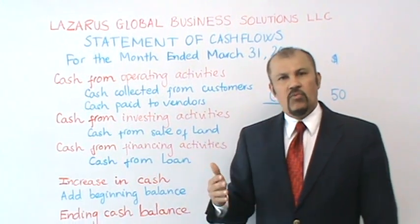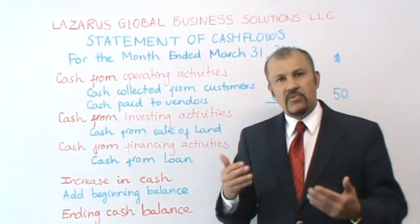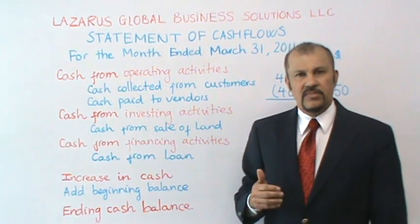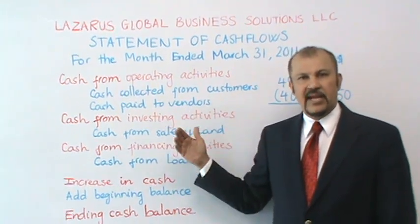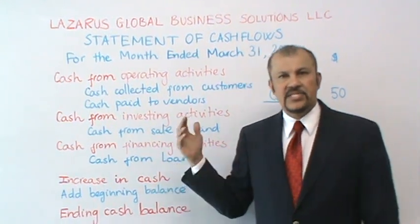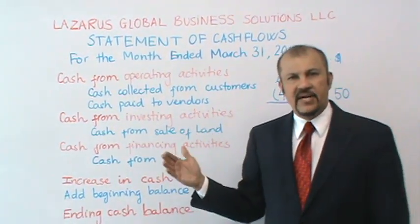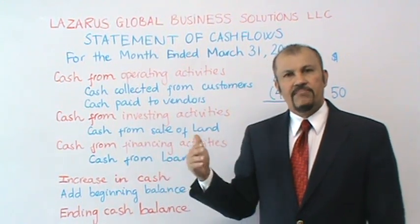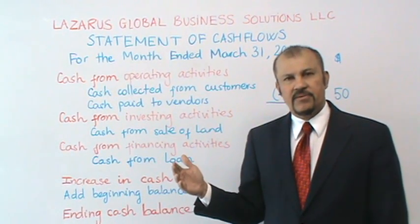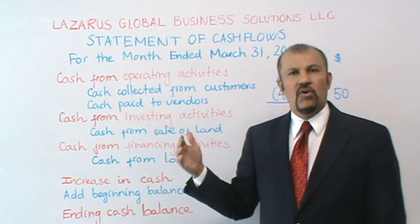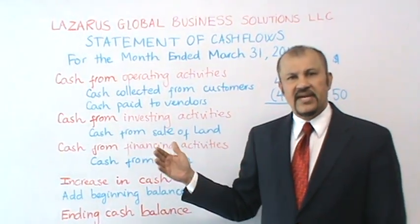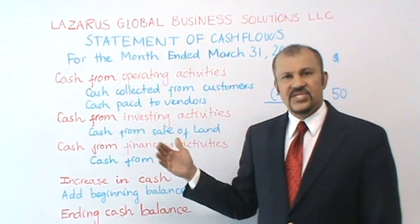How do we know which of the three sections a cash transaction goes into? Let me give you some broad guidelines and run through some numbers in our sample statement. For the operating activity section, the broad guideline is: if a cash transaction affects your revenues or your expenses, then we would tend to classify it in the operating activity section.